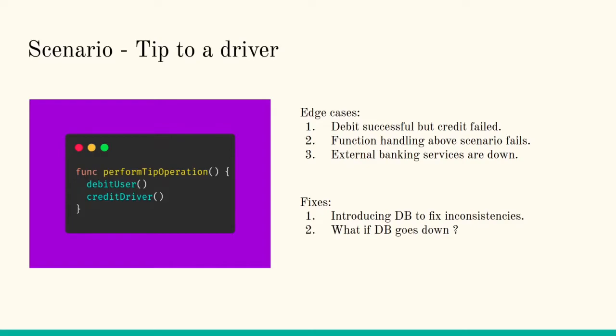If you write a program about it, how are you going to execute it? So it can be a simple function, right? It can be a simple function where you have to perform a tip operation. How does this tip operation go? You first have to debit from the account of the user and then you have to credit to the account of the driver. While writing this function, it can be a simple function, but when actually executing them, it's not as simple as you think.